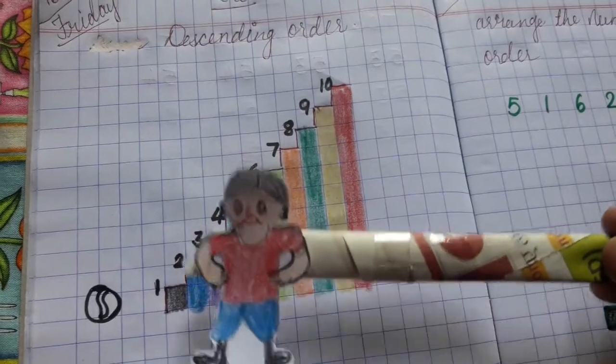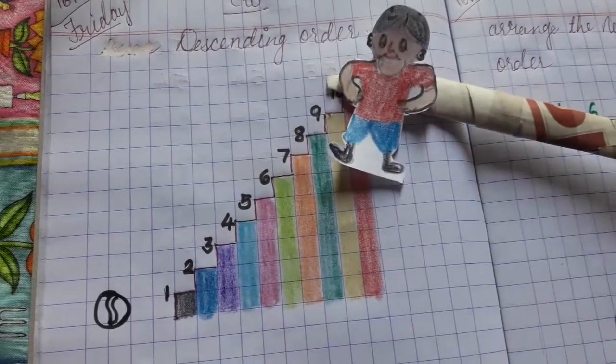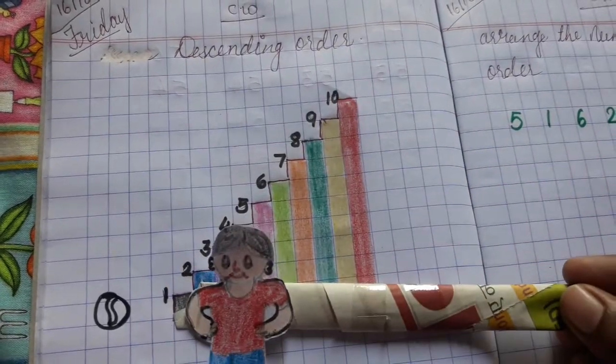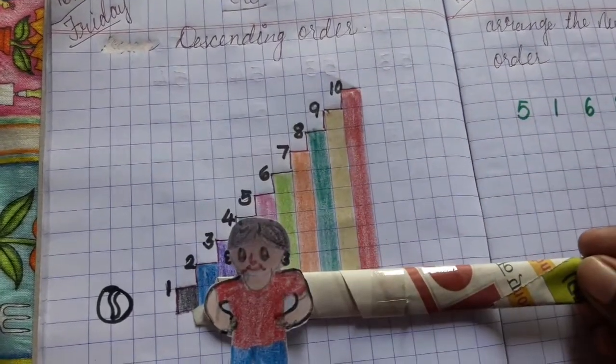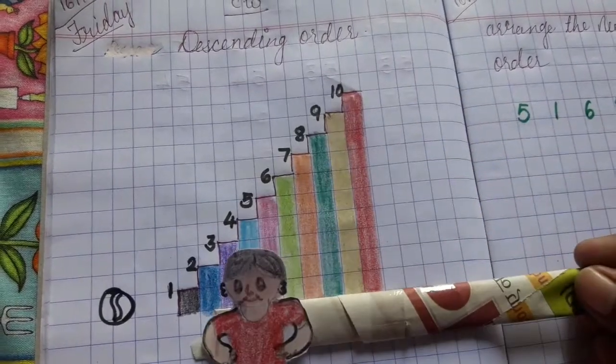So children, Tom moved from big number to small number.